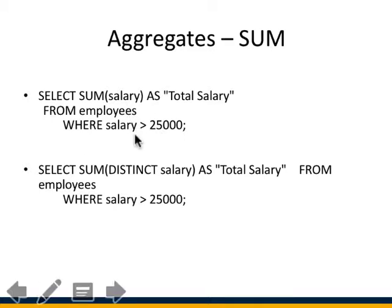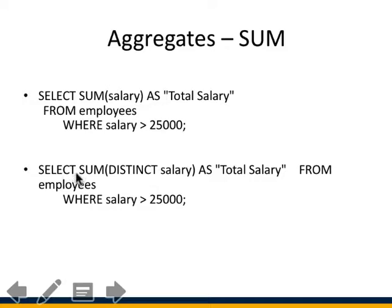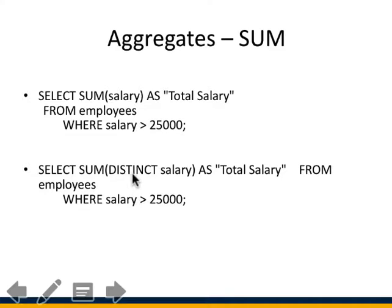This query uses SELECT SUM(salary) to find the combined total salary of all employees whose salary is more than $25,000. The second query uses SELECT SUM(DISTINCT salary) — the only difference is DISTINCT. In the first case, all qualifying salaries are summed. In the second case, if two employees each earn $30,000, only one of those $30,000 values is counted in the sum.